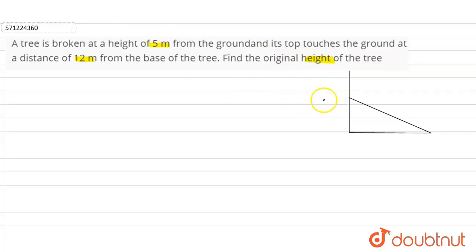Now it is given in the question that this is the original height of the tree, and it is broken at a height of 5 meter. So this is 5 meter and it touches the ground at a distance of 12 meter from the base. So this is 12 meter, the base.